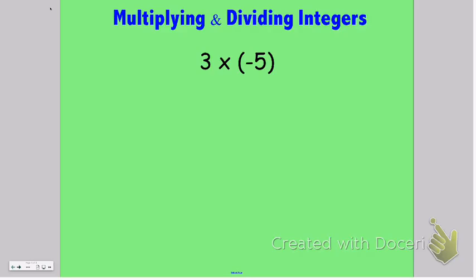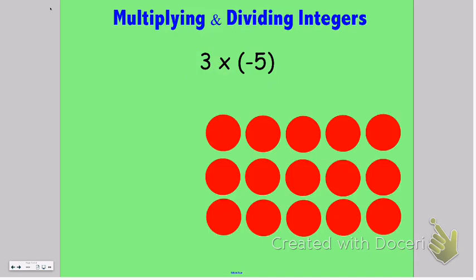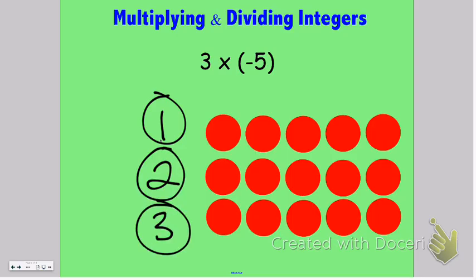So in this problem right here we have three copies of or groups of negative five. As you can see I have gone ahead and made three groups. Here's one, two, three groups of negative five and remember the red demonstrates that these are negative.